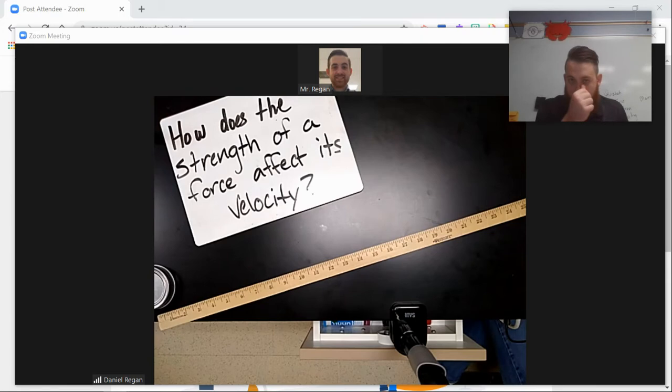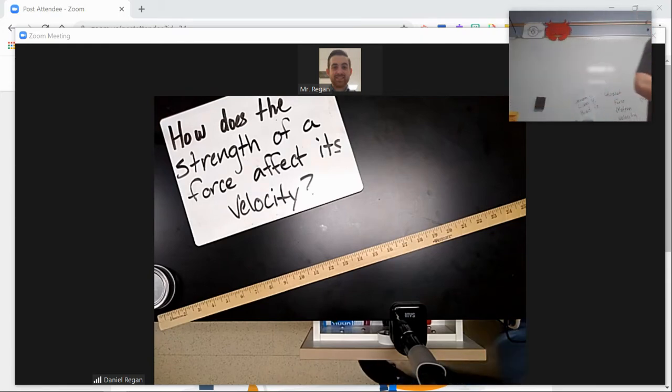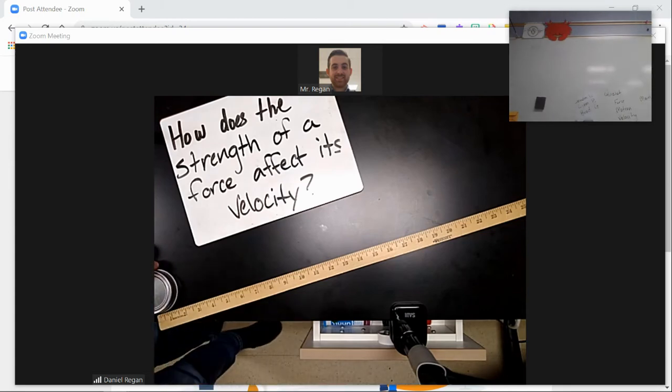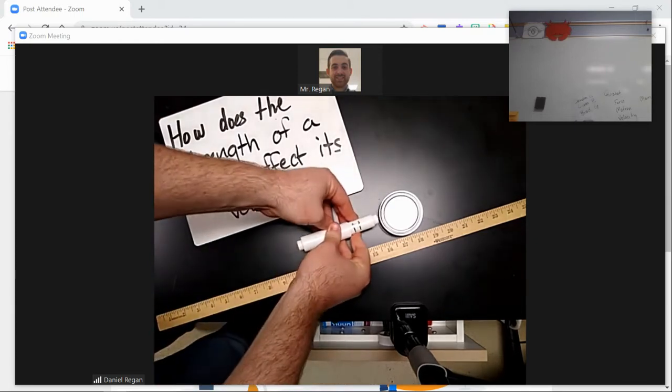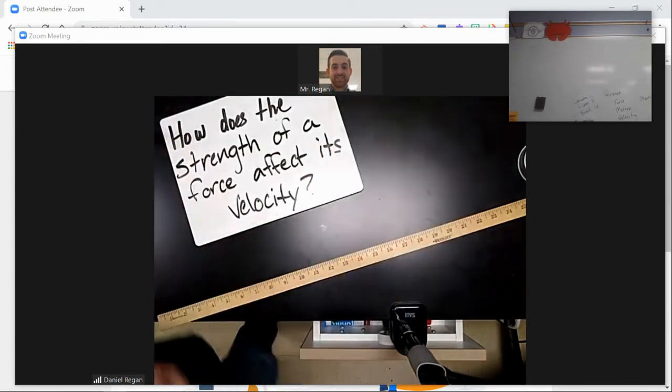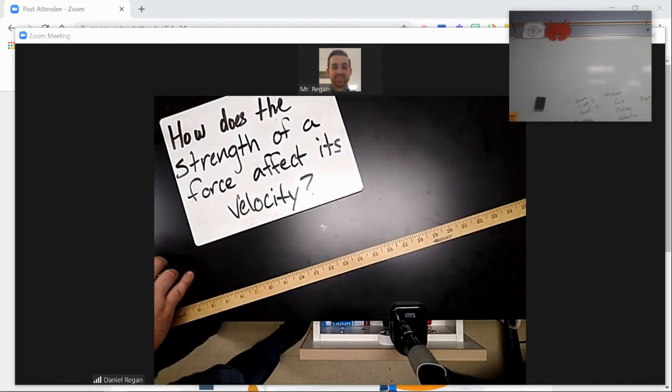So let's go ahead and begin the lab. We're going to start by looking at how our velocity changes at force one and how it travels across our meter stick. So this is going to be force one. Takes about three strikes to get it the length of our meter stick, which is about 25 centimeters.